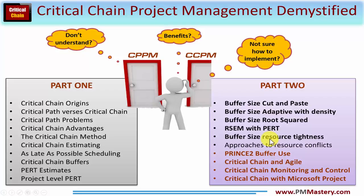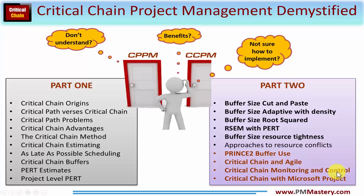I'll explain exactly what that means, and then share with you the approaches you can use to resolving resource conflicts. The final four might be of particular interest: ideas about buffer use when using a methodology such as PRINCE2, the use of critical chain with agile project management, critical chain monitoring and control, and the use of critical chain with the planning tool Microsoft Project.